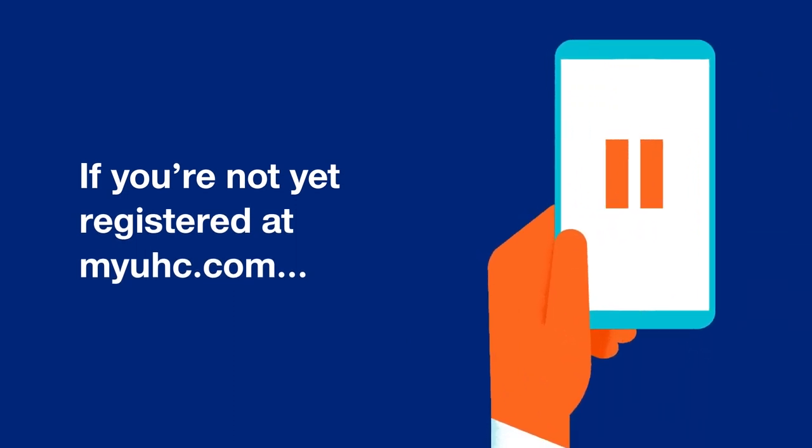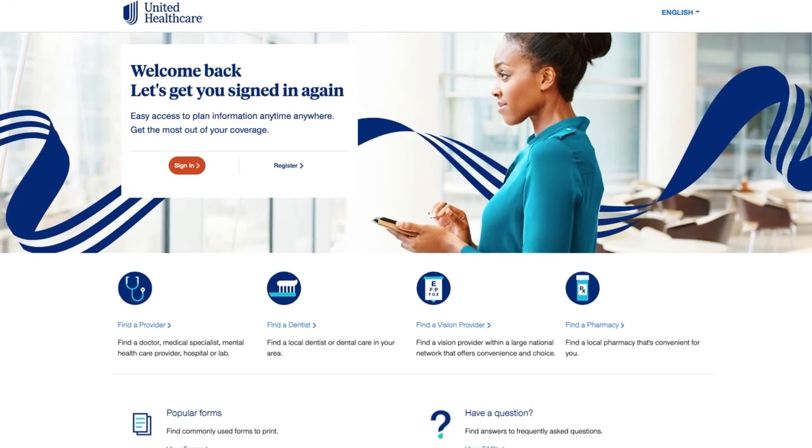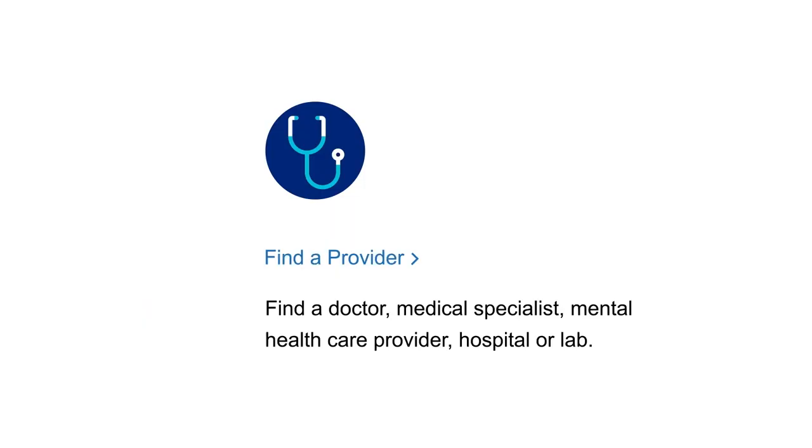Now if you're not yet registered at myUHC.com, or your health plan isn't active yet, here's how you'll find a PCP. At the myUHC.com sign-in page, you'll select Find a Provider and then choose Medical Directory.